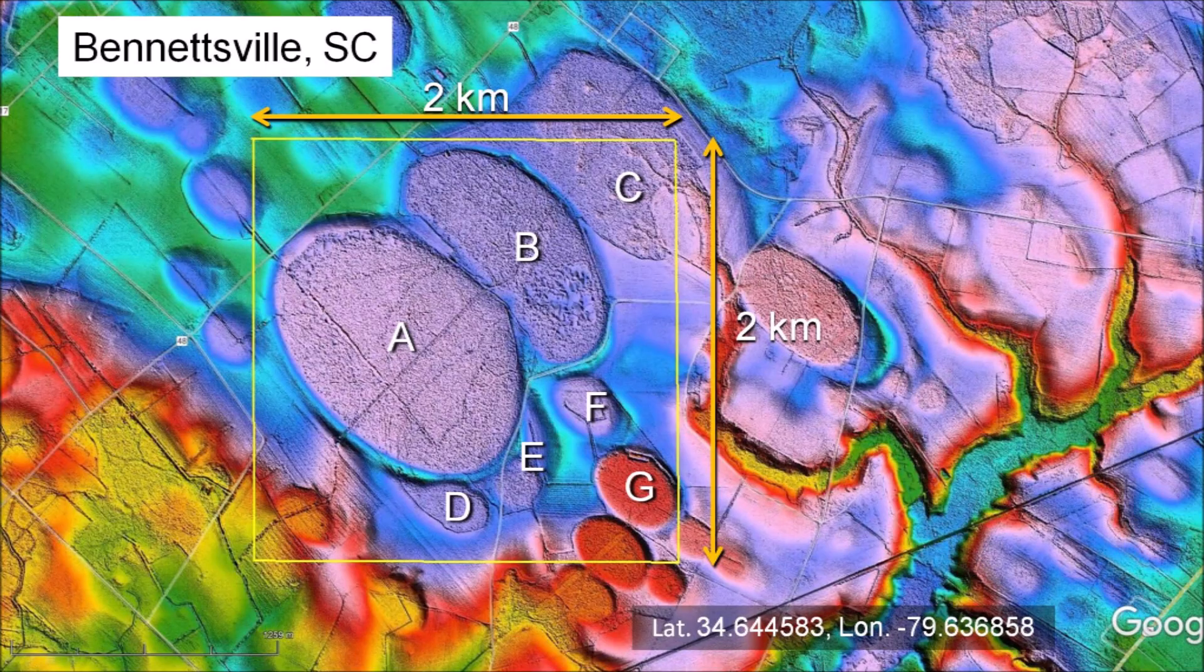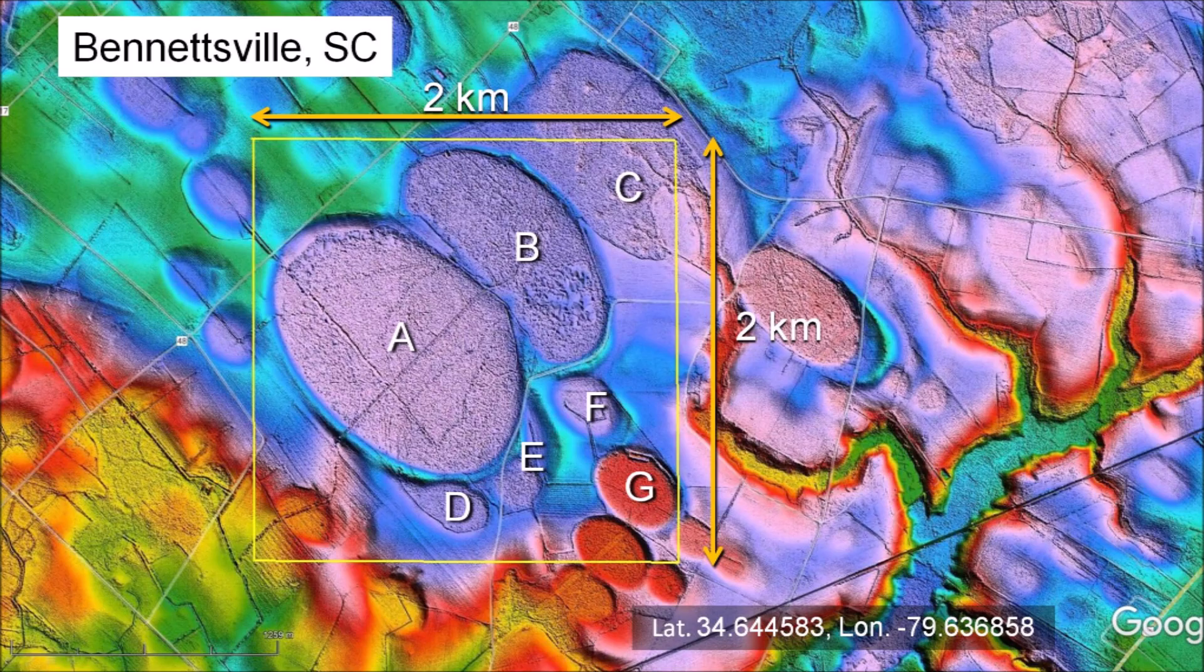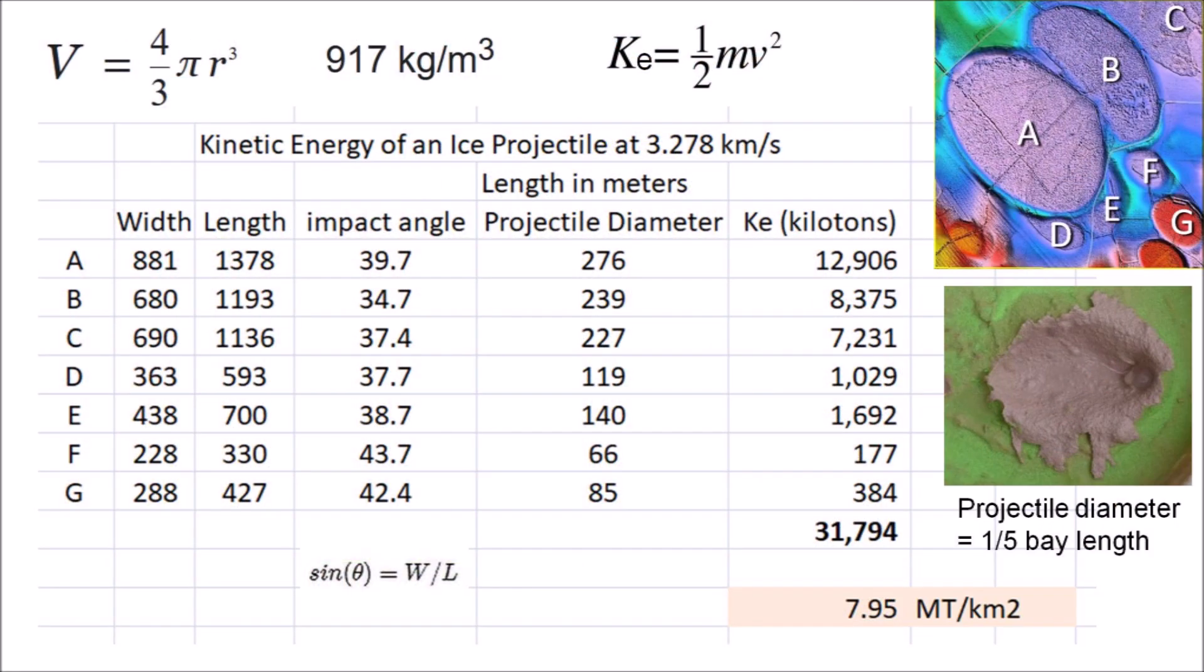I calculated the energy of the impacts that made a cluster of Carolina Bays in a 4 square kilometer area near Bennettsville, South Carolina. Assuming an impact velocity of 3.3 kilometers per second, which is about 9 times the speed of sound, and projectile diameters of one-fifth the length of the basin, the energy of formation of these Carolina Bays was about 8 megatons of TNT per square kilometer.